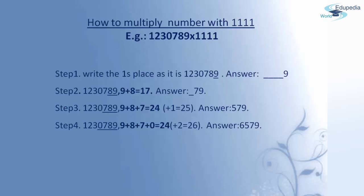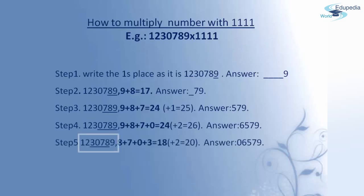Moving further, if you observe clearly, I am adding only 4 digits at a time, leaving the last digit 9. So here I am adding the digits in tens place, hundreds place, thousands place and ten-thousands place — that is 8, 7, 0 and 3. Adding all four digits gives 18. Adding carry of 2 gives 20. So 0 is written in the answer and 2 is taken as carry. In the answer, I now have 0, 6, 5, 7 and 9.